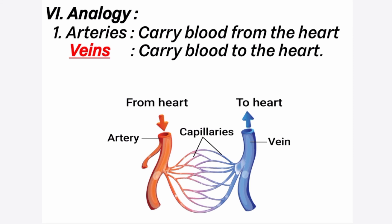Arteries carry blood from the heart to various parts of the body. Veins carry blood from the various parts of the body back to the heart.